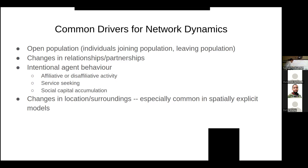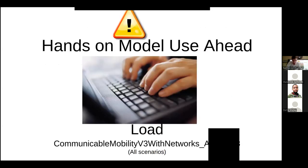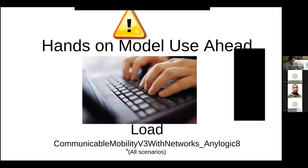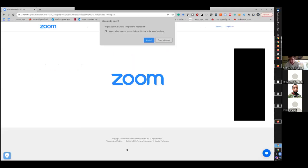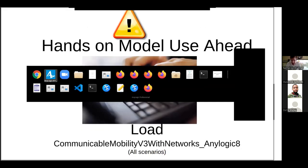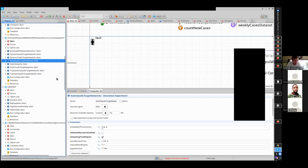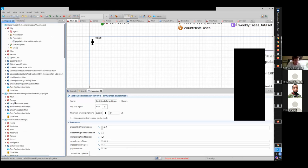And finally, changes in location or surroundings often induce network dynamics. When we change the surroundings we're in - mobility among locations can affect network structure. To show some of these, I'd like to open up this model called communicable mobility version 3 with networks. There's a version of this without networks, but I think it's rather evocative with networks. So download it from the site.